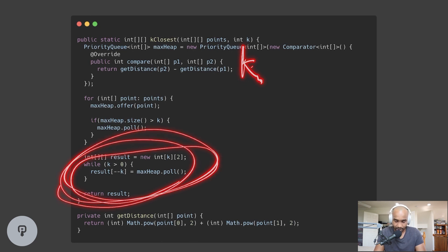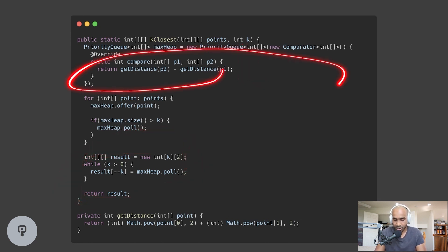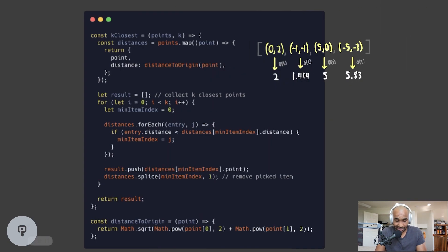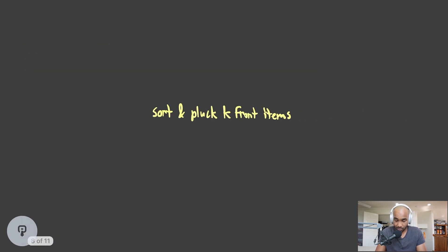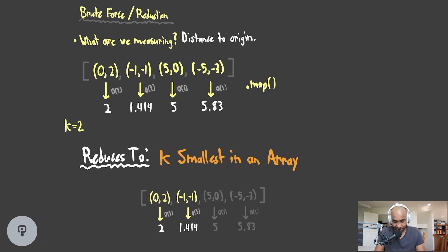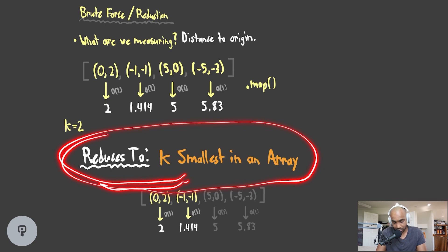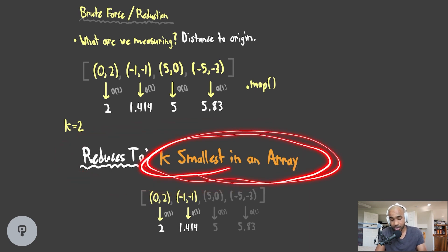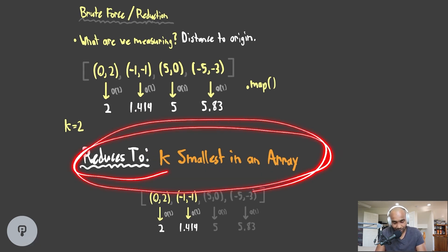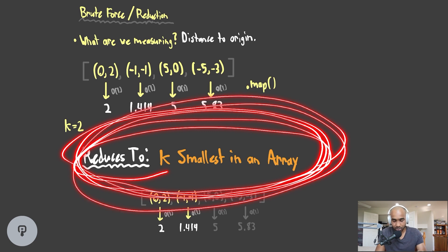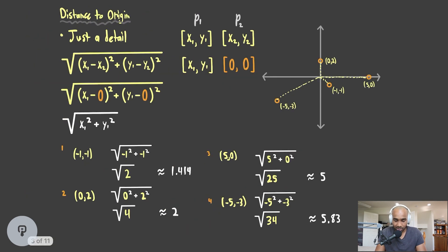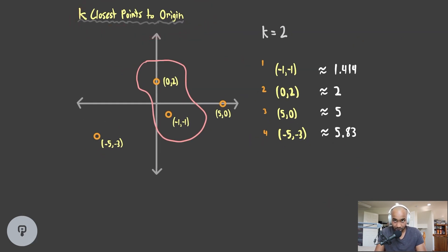We've looked at the heap approach and the approaches of mapping items, then either sorting and plucking or doing repeated scans. The key takeaway is that this is a reduction — we reduced this problem to one we already know how to solve: the k smallest elements in an array. Keep an eye out for problems with fancy decorators that are really just bare-bones problems we already know how to solve. That's the problem of k closest points to the origin.